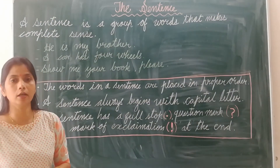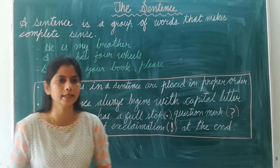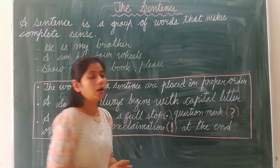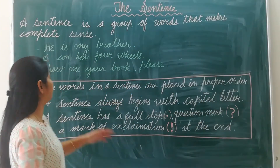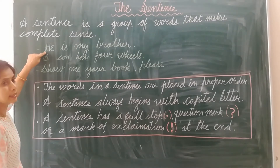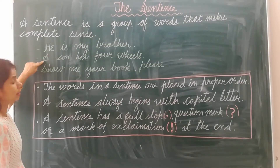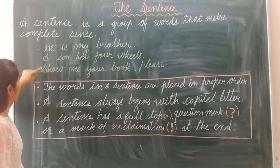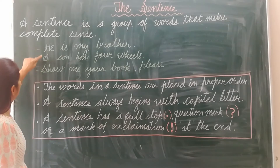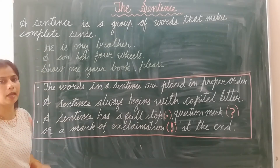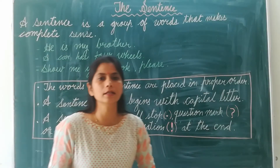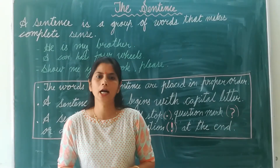The second essential requirement is: a sentence always begins with a capital letter. See all these sentences — the first letter of the first sentence is H, in the second sentence it is A, and the third is S. You will notice that all these sentences are beginning with a capital letter. It means a sentence should begin with a capital letter.